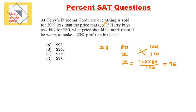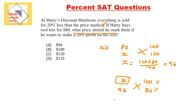They're asking for the marked price — the price on the tag. Since everything is sold for 20% less than the marked price, the selling price of $96 represents 80% of the marked price. Cross multiplying gives X equal to 96 times 100 over 80, and the answer is $120.